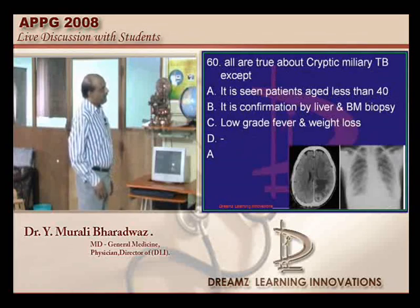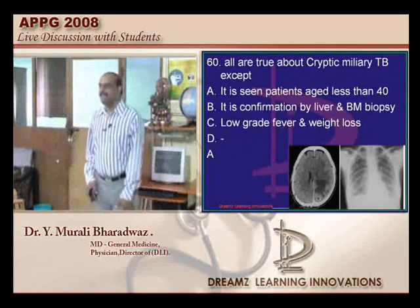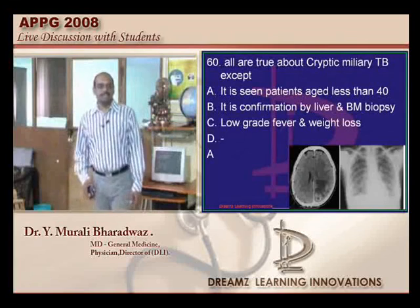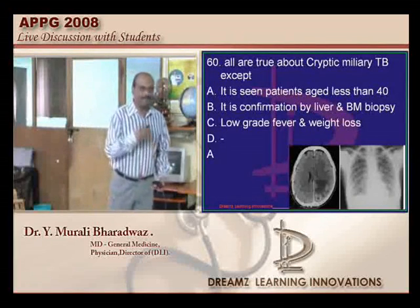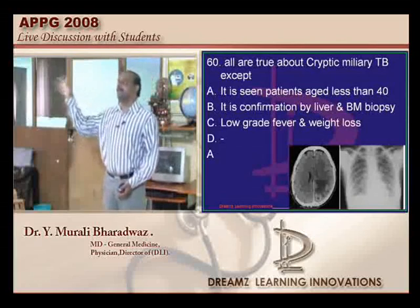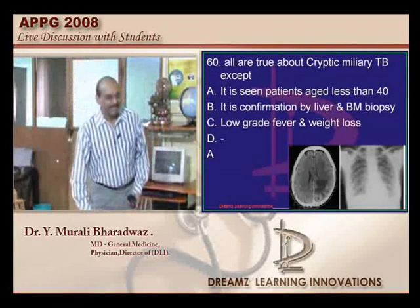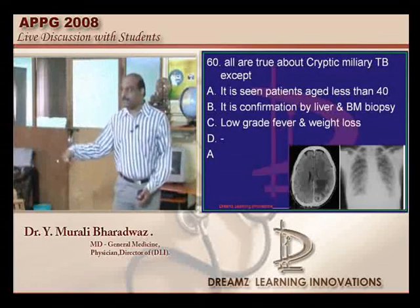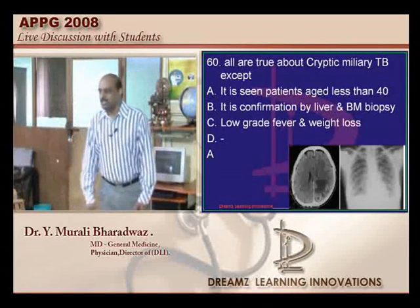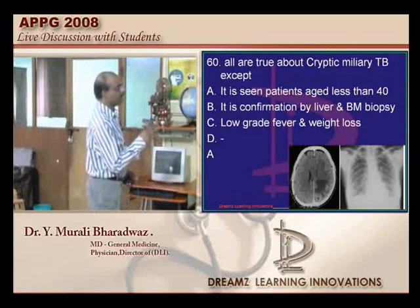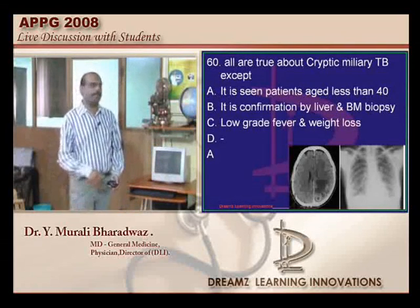Cryptic miliary tuberculosis is one of the challenging diagnoses because the patient's ESR may not be abnormal, Mantoux may not be positive, AFB may not be found, yet the patient has had fever for a long duration. Bone marrow aspiration can reveal the presence of mycobacteria, and bone marrow aspiration along with liver biopsy confirm the diagnosis in cryptic miliary TB.